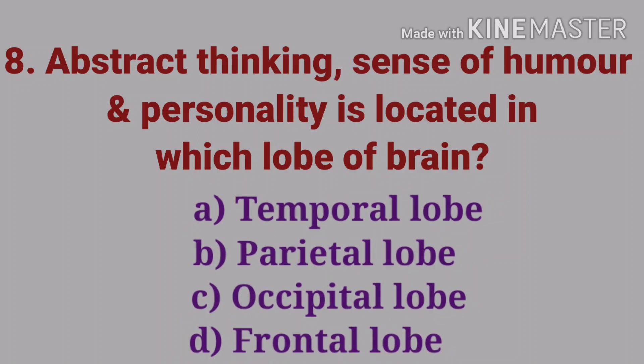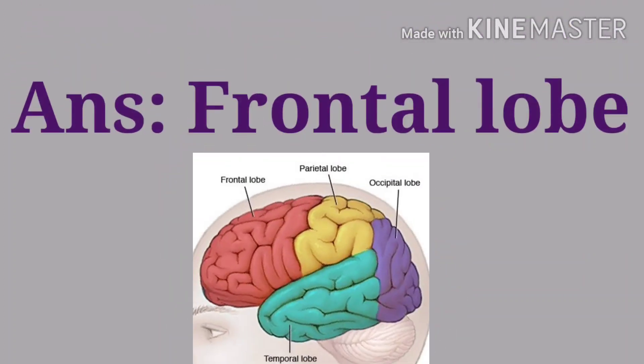The eighth question: abstract thinking, sense of humor, and personality are located in which lobe of the brain — options are temporal lobe, parietal lobe, occipital lobe, and frontal lobe. The answer is frontal lobe. In the parietal lobe, sensory perception such as touch, pain, temperature, vibration, and pressure are present. In the temporal lobe, hearing, smell, memory, and sensory speech are present. In the occipital lobe, vision is located.